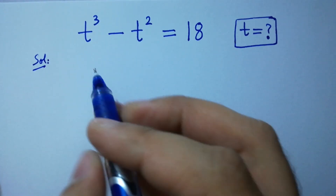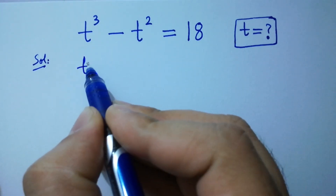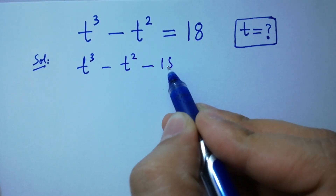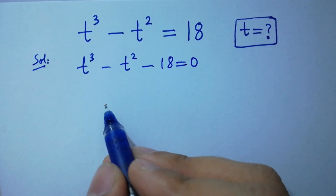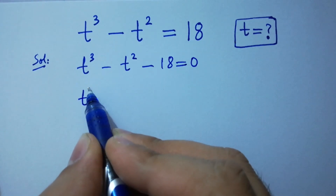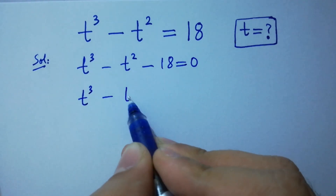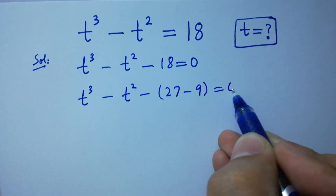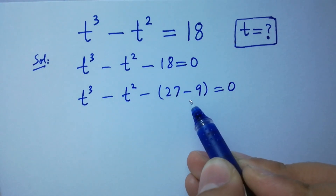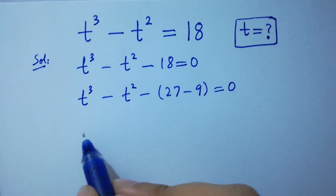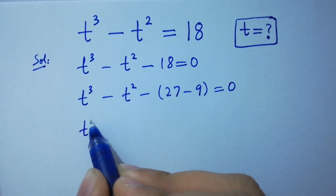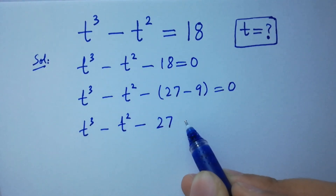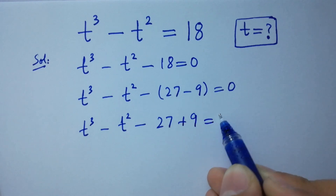It can be written as t cubed minus t squared minus 18 equals 0, which is the same as t cubed minus t squared minus 27 minus 9 equals 0, since 27 minus 9 is 18. So t cubed minus t squared minus 27 plus 9 equals 0.